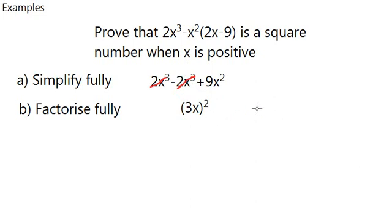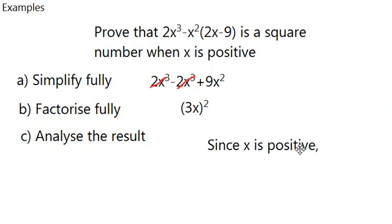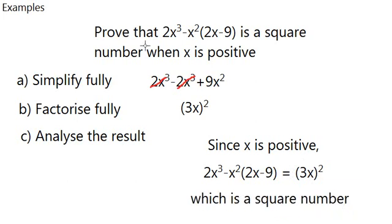Basically that is how you solve this. And the last thing you do is to analyze what you get finally, which is 3x squared. And you have to say something. When x is positive, or since x is positive, then we can draw the equation. The original one is equal to what you've got. And you say that this is a square number, so the statement is true.